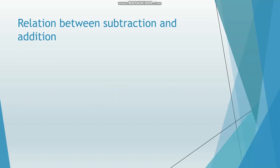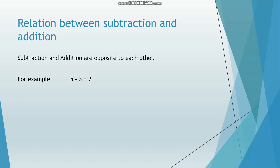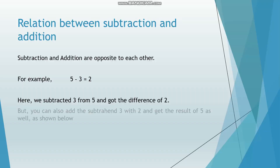The relation between subtraction and addition: subtraction and addition are opposite to each other. For example, 5 minus 3 equals 2. Here we subtracted 3 from 5 and got the difference of 2. But you can also add the subtracted 3 with 2 and get the result of 5, as shown below: 3 plus 2 is equal to 5.